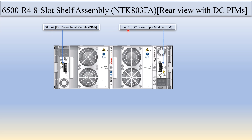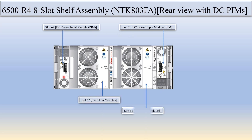Slot 62 and slot 61 are fixed for the DC power input module. In this shelf assembly, the DC power module is used. Slot 52 and slot 51 are used for the fan modules.